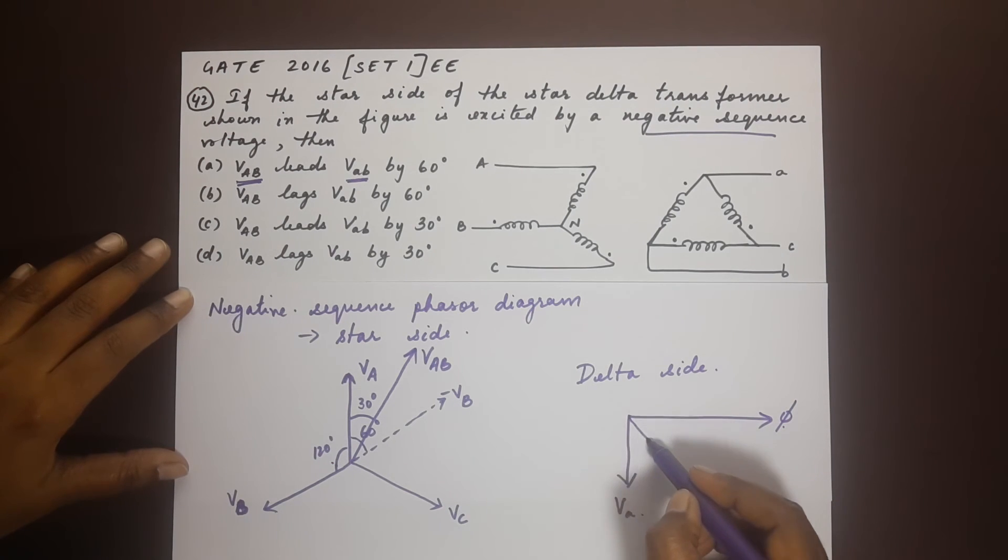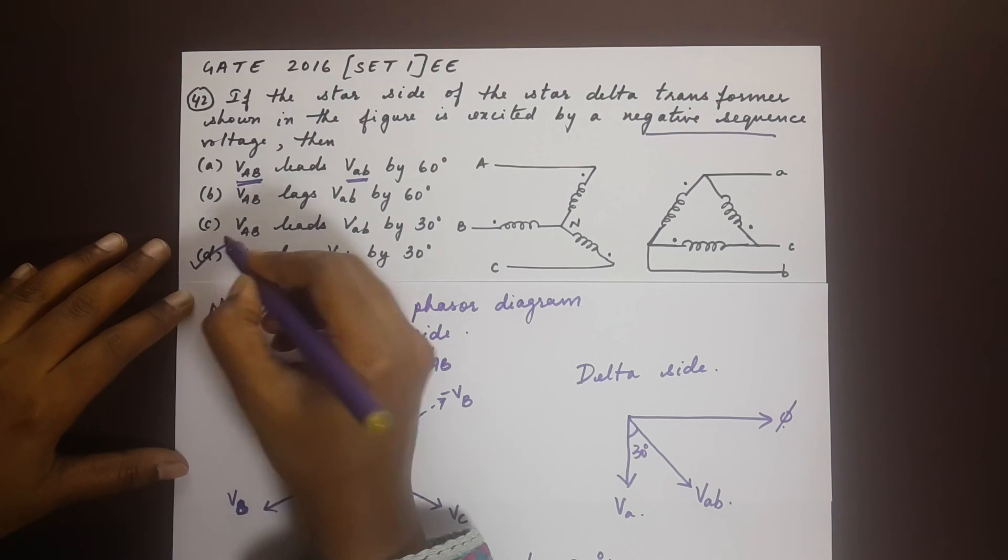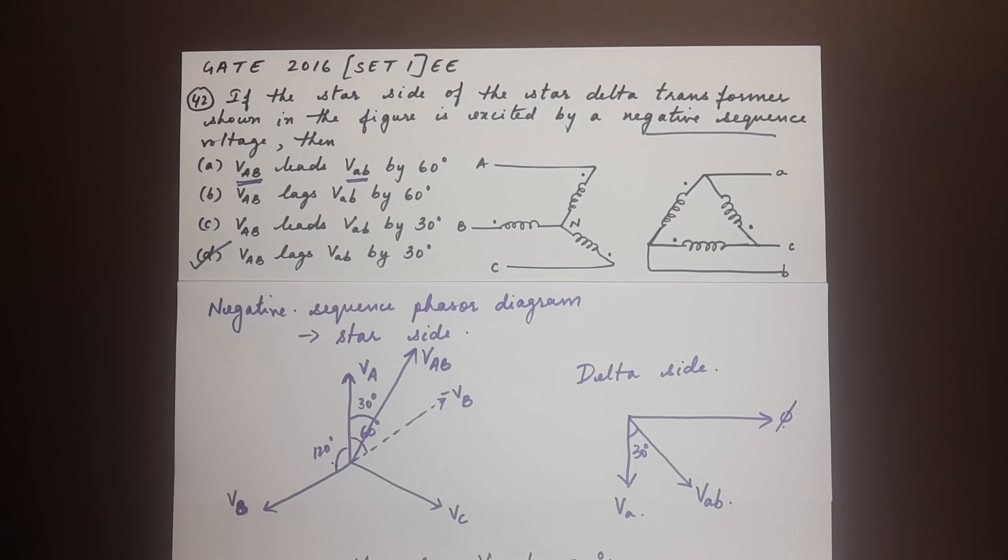Now vab would be aligned along this region here and this would be 30 degrees. Now this tells us that vab lags VAB by 30 degrees. So the right answer is D. I hope this has helped.